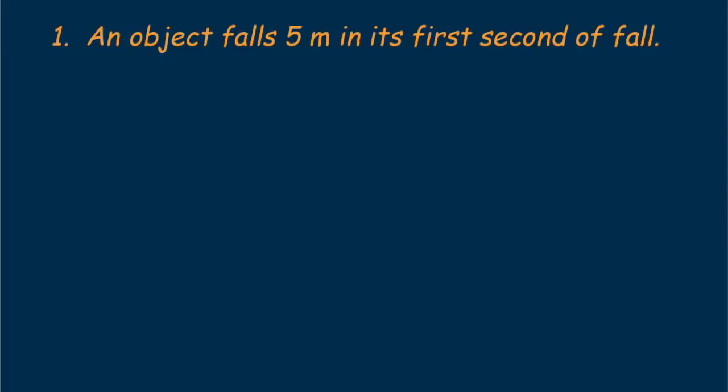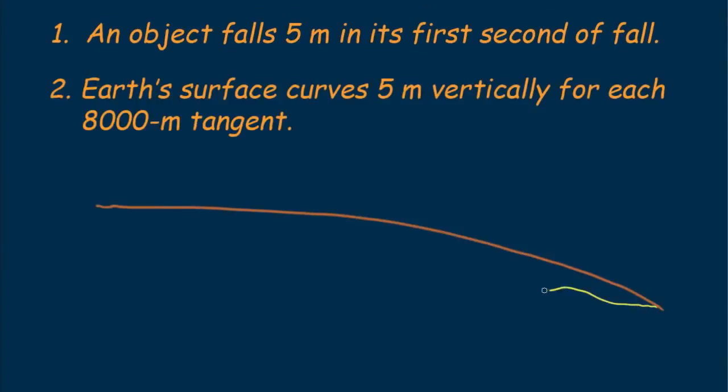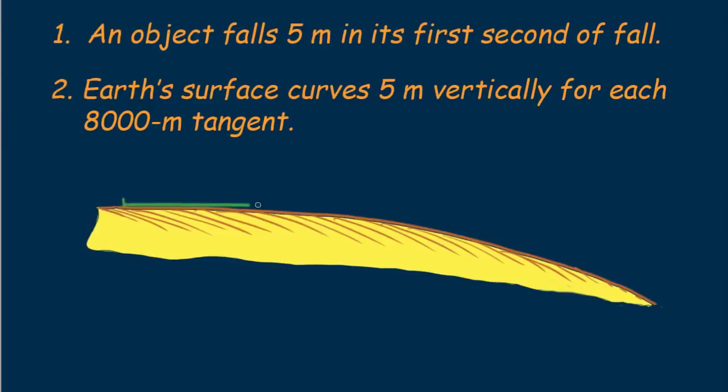There are two things you need to know. Number one, that an object falling beneath a straight line path falls a vertical distance of five meters in its first second of fall. That's the distance an apple would fall in one second if you dropped it from the roof of your house. The second thing you need to know is how round earth is. A geometrical fact about the curvature of earth is that its surface drops a vertical distance of five meters for every 8,000 meters tangent to its surface. 8,000 meters is 8 kilometers.